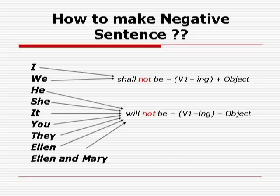How to make a negative sentence — it is very simple. All you need to do is put 'not' between 'shall' and 'be', or between 'will' and 'be'. The sentences become: I shall not be playing cricket. We shall not be playing cricket. He will not be playing cricket. She will not be playing cricket. It'll not be playing cricket. You'll not be playing cricket. They'll not be playing cricket. Alan will not be playing cricket. Alan and Mary will not be playing cricket.